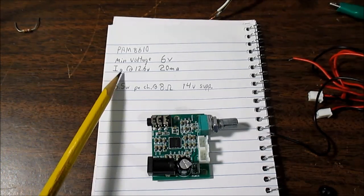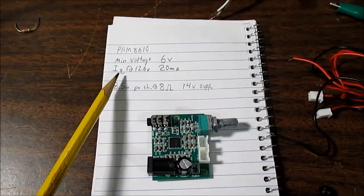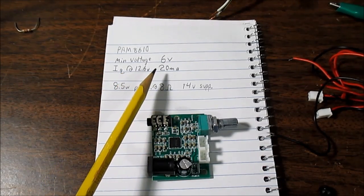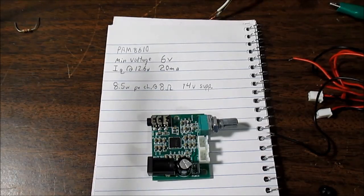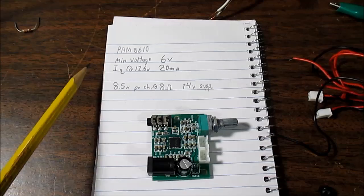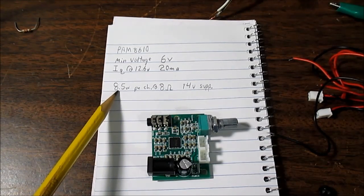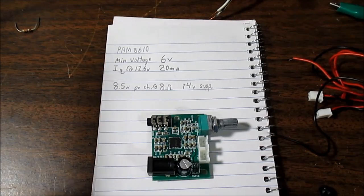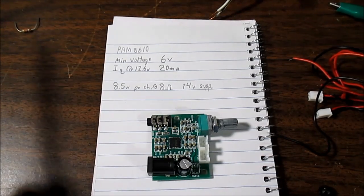The quiescent current, in other words, the idle current at 12.6 volts, is only 20 milliamps. That is excellent. Great for battery use. And of course, like we said before, we got 8.5 watts, 8 ohms, with 14 volts supply. Clean power, both channels driven.